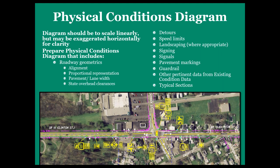Things to consider for physical conditions diagrams include alignment, proportional representation, pavement and lane width, overhead clearance issues, speed limits, and landscaping where appropriate — we don't need to document every single tree. Signing is always important, and low-cost improvements like signing are the fastest way to get a potential treatment into the field. Other things include guardrail, and typical sections are definitely good to document if there's an option to change the cross section of the roadway. It's really helpful to overlay the diagram on an aerial image so that people — five or six years down the road — can look at it and have that aerial image to show exactly what was happening at the time the study was completed.